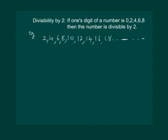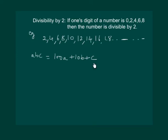Let us try to understand this using a general form. Take a 3-digit number ABC, which can be written as 100A plus 10B plus C. We know that 100 is divisible by 2, so 100A is divisible by 2. Similarly, 10 is divisible by 2, so 10B is divisible by 2. For C to be divisible by 2, it can take the values 0, 2, 4, 6, or 8. Only if C takes one of these values will the number ABC be divisible by 2.